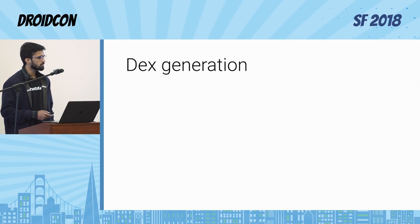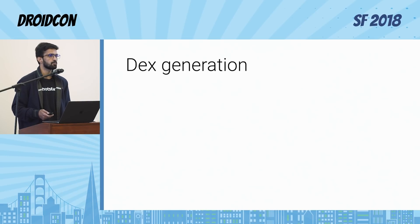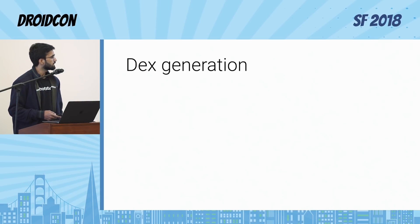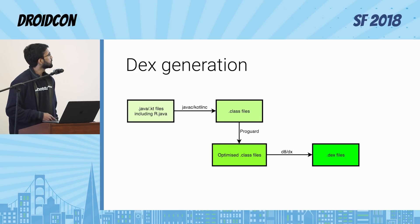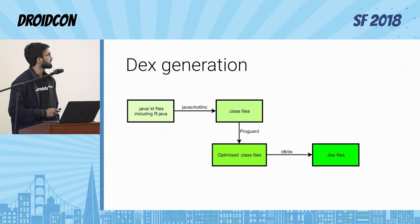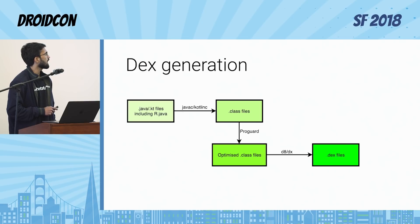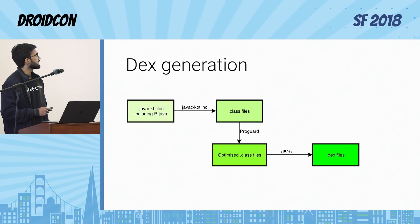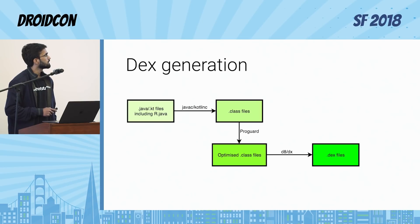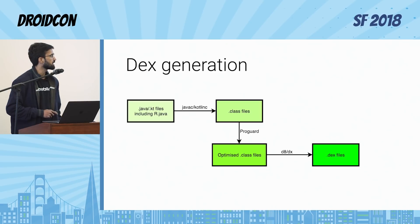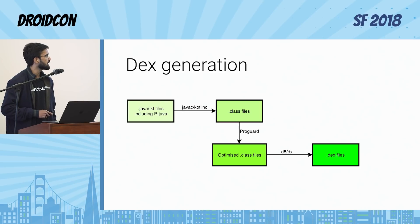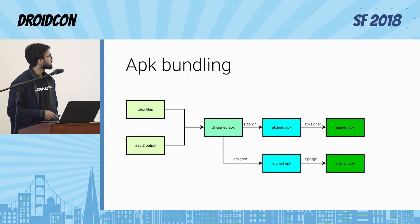We mostly write Java or Kotlin code that gets converted to DEX at the end of the day. We have R.java generated by AAPT2 and other Java files we've written ourselves. These are taken by the Java or Kotlin compiler and converted into bytecode, which can optionally be optimized by ProGuard, and then passed through D8 or DX to produce the DEX files.